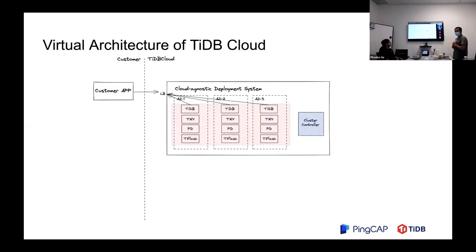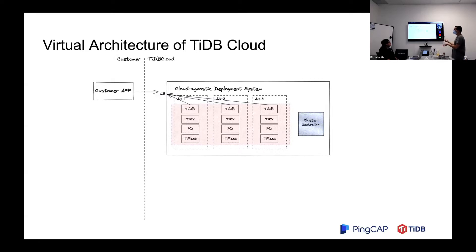Here is the virtual architecture of TiDB Cloud. For deployment, we need to deploy the cluster across multiple AZs. In each availability zone we have TiDB, TiKV, PD, and TiFlash. The deployment system should be cloud-agnostic. We will have a cluster controller to control the balance, and customer applications connect through a load balancer. For multi-tenancy, we provide per cloud provider, per region, per tenant resource containers for isolation.